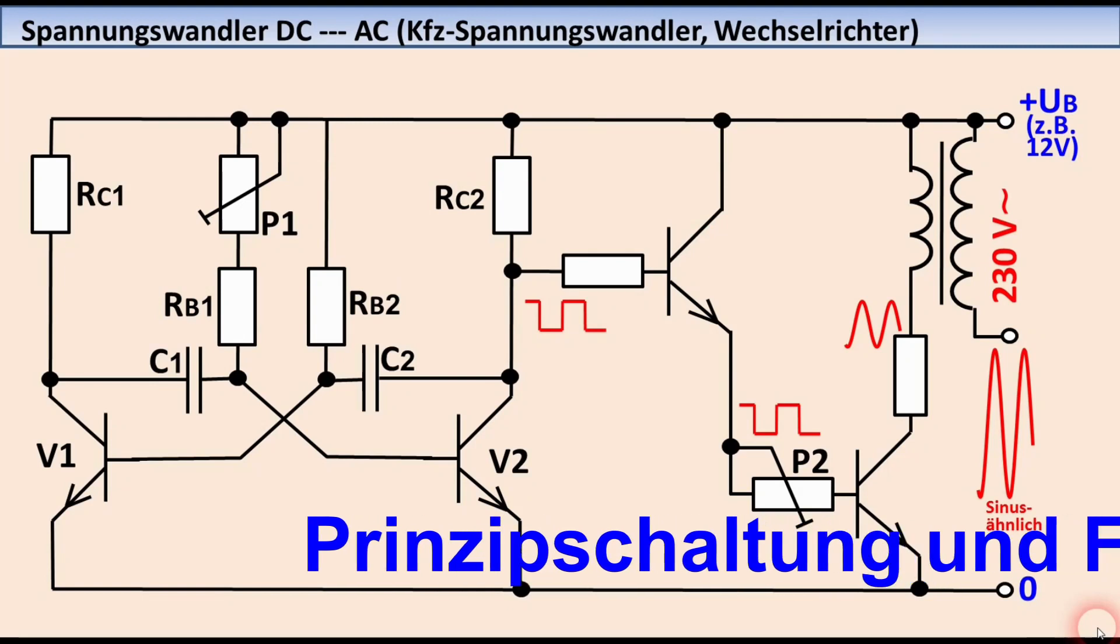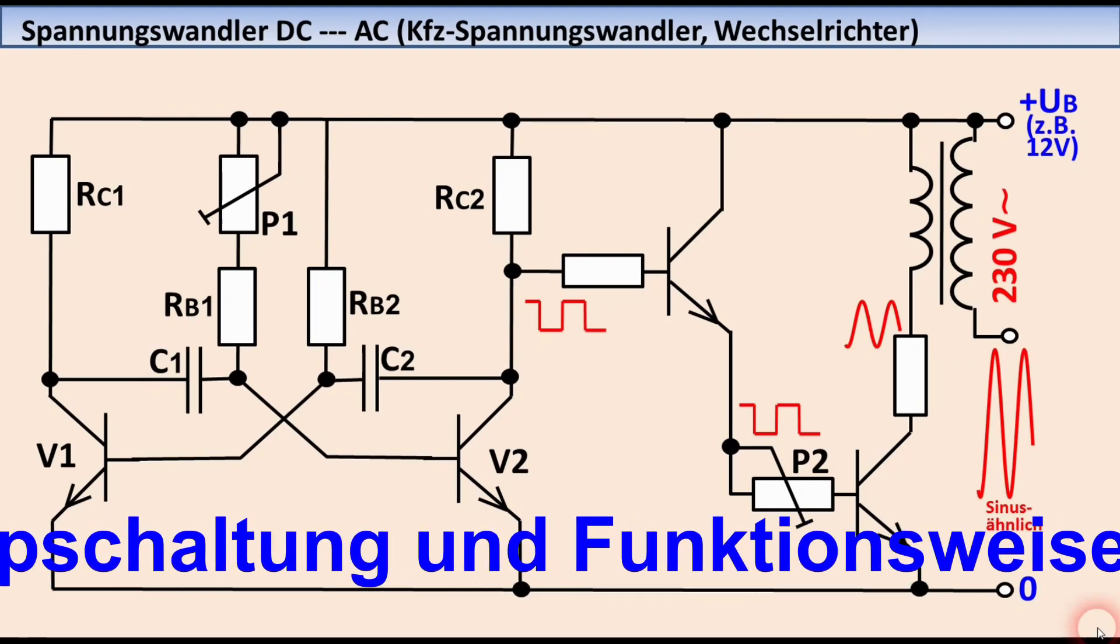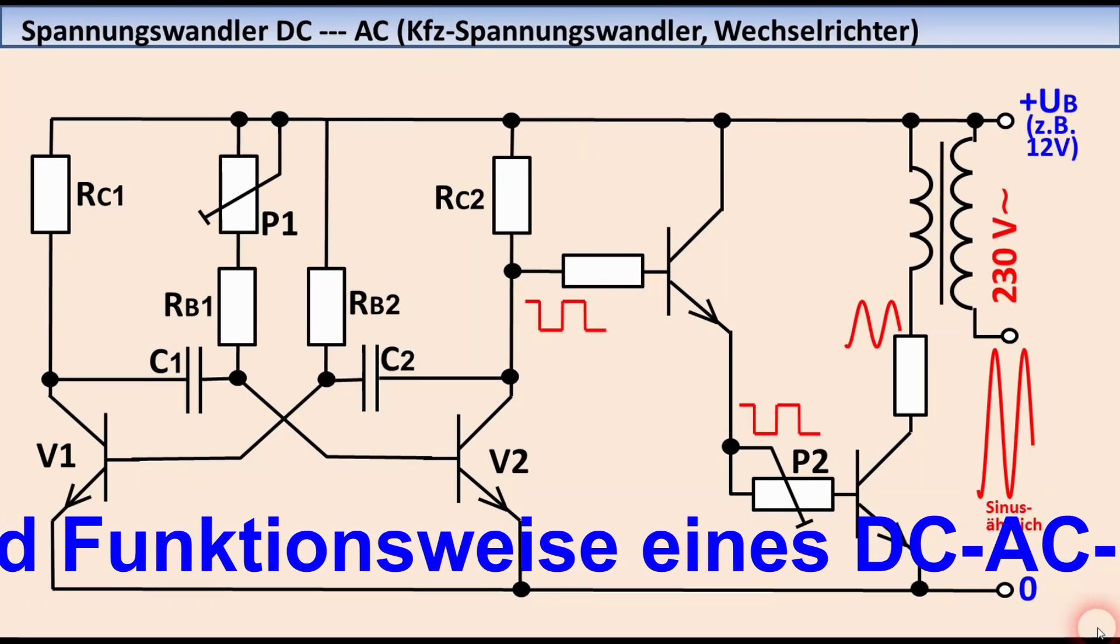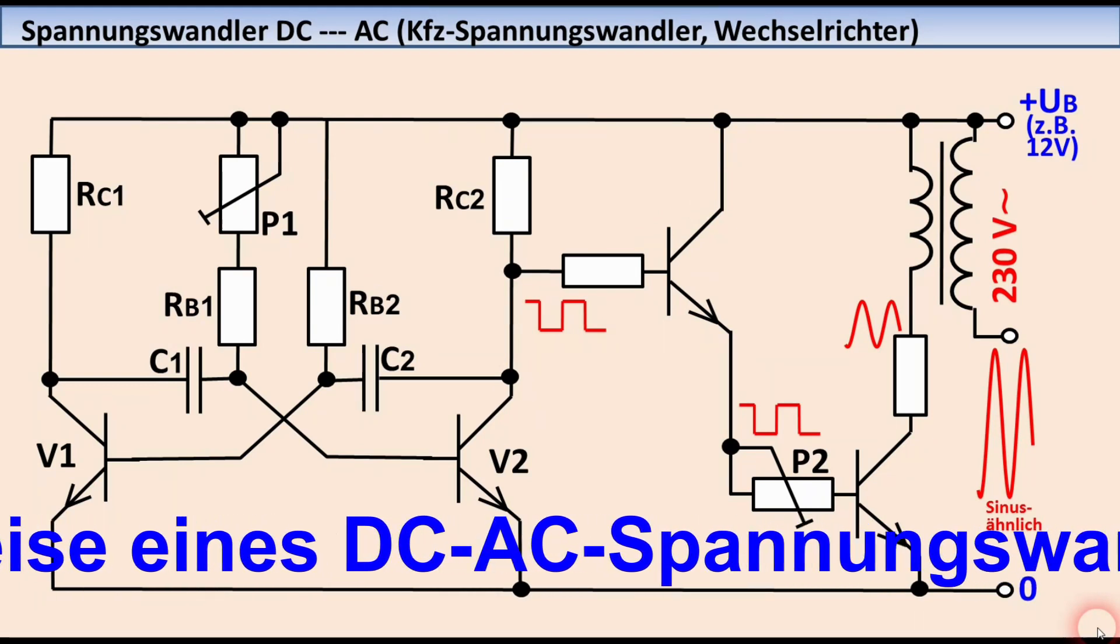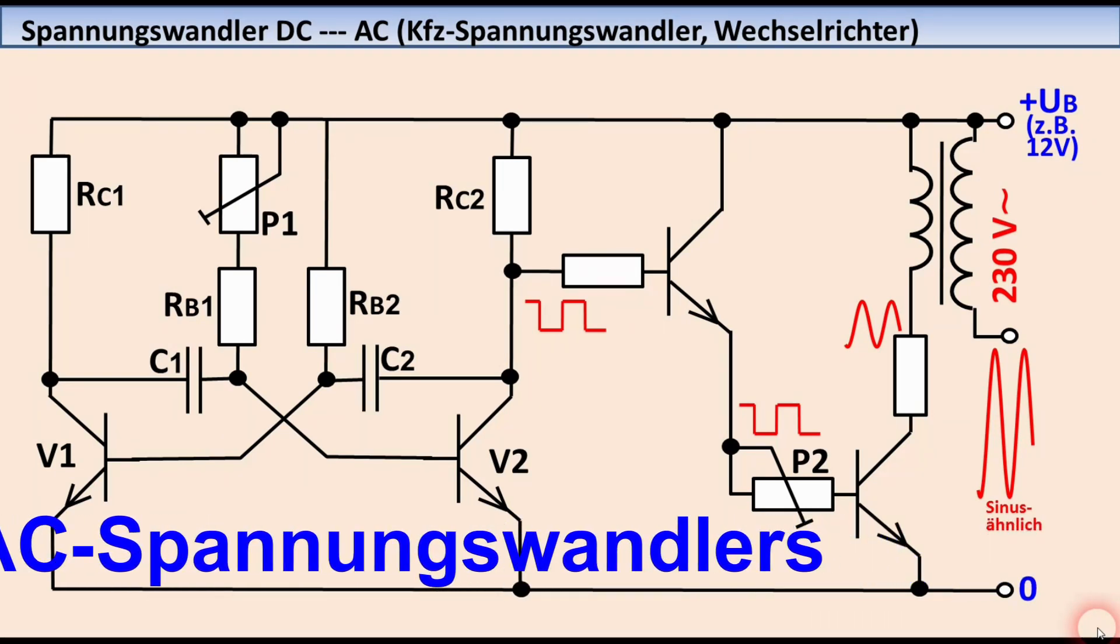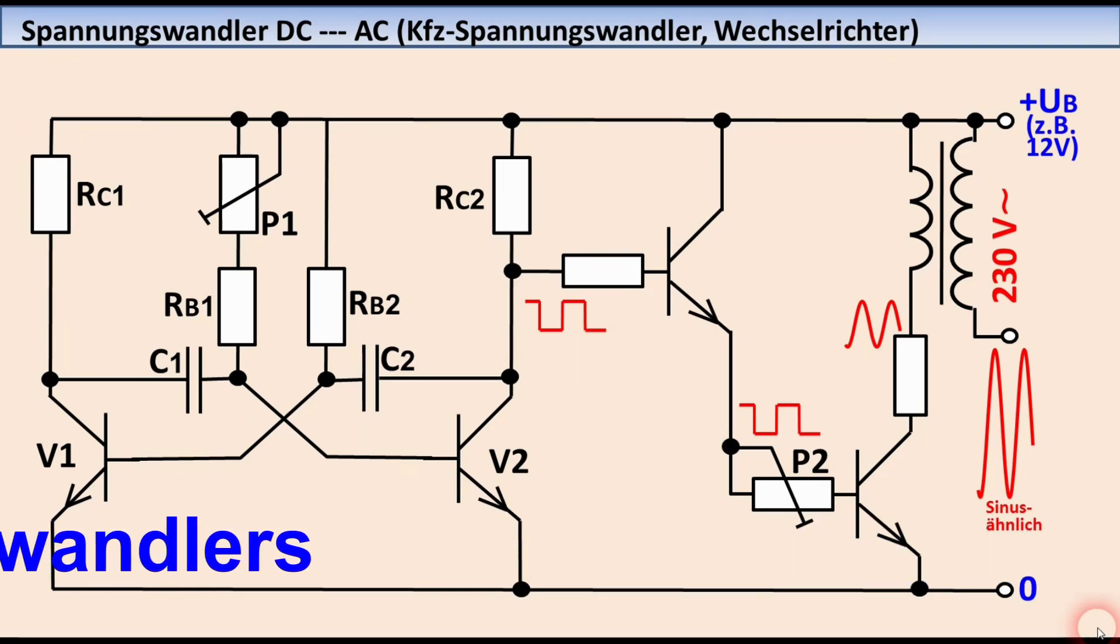Eine sehr einfache Schaltung, mit der man eine Gleichspannung in eine Wechselspannung umwandeln kann, ist die A-stabile Kippschaltung, die im Digitaltechnik-Tutorial Nr. 8 ausführlich beschrieben wird. In diesem Beispiel wird die Transistorschaltung verwendet, aber natürlich kann man auch A-stabile Kippschaltungen mit ICs, wie z.B. dem NE555 usw. verwenden.